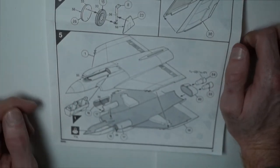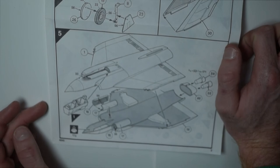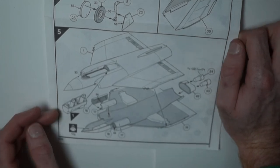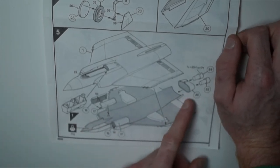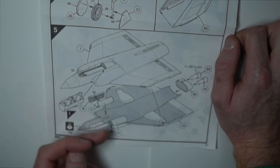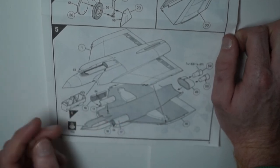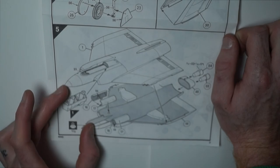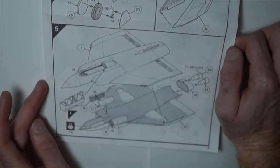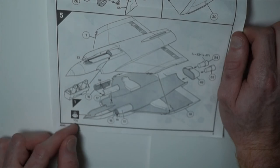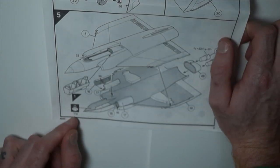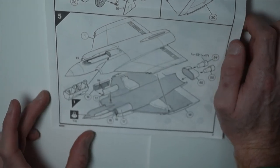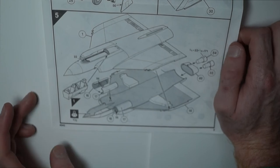Step five is adding the exhaust nozzles. I believe they are air intakes to add in the cockpit and then sealing the top and bottom fuselage halves together. I suggest down here to add ten grams of weight as it could be a tail sitter.